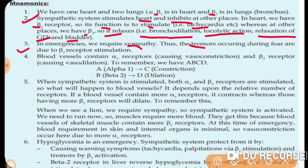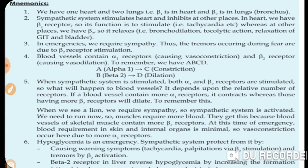During emergencies, sympathetic stimulation causes tremors due to beta-2 receptor stimulation — because excessive muscle contraction is related to beta-2 stimulation. In blood vessels, alpha-1 receptors cause vasoconstriction.